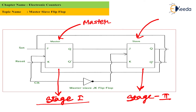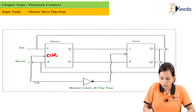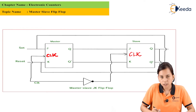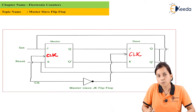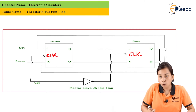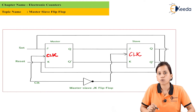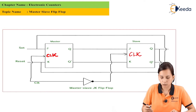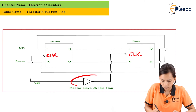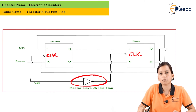Both stages are JK flip-flops. The output of stage one is connected to the input of stage two. Both clocks are connected, but the clock for stage two (the slave) is connected in a complemented way through a NOT gate. This is one of the most important points for the master-slave flip-flop.